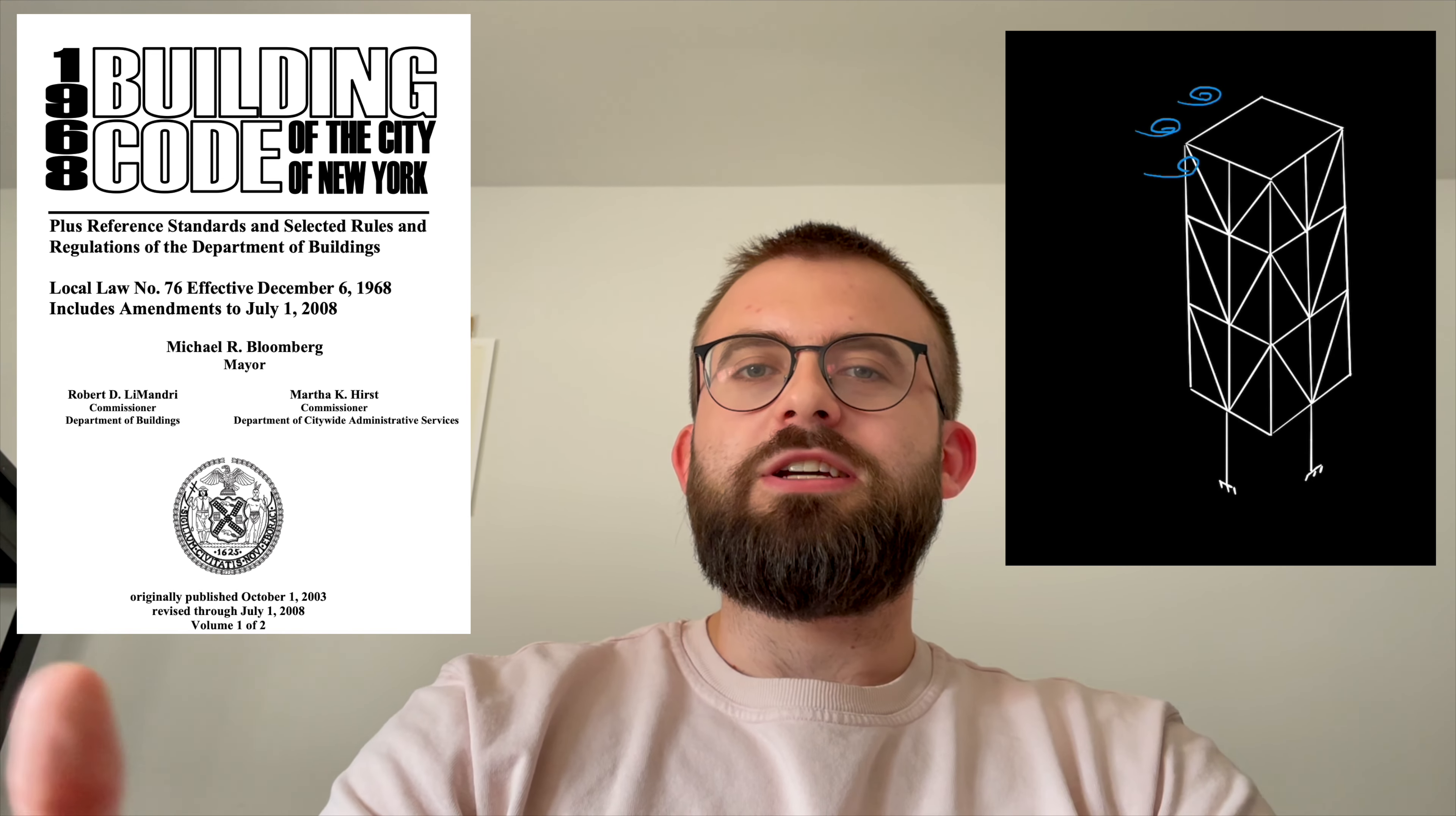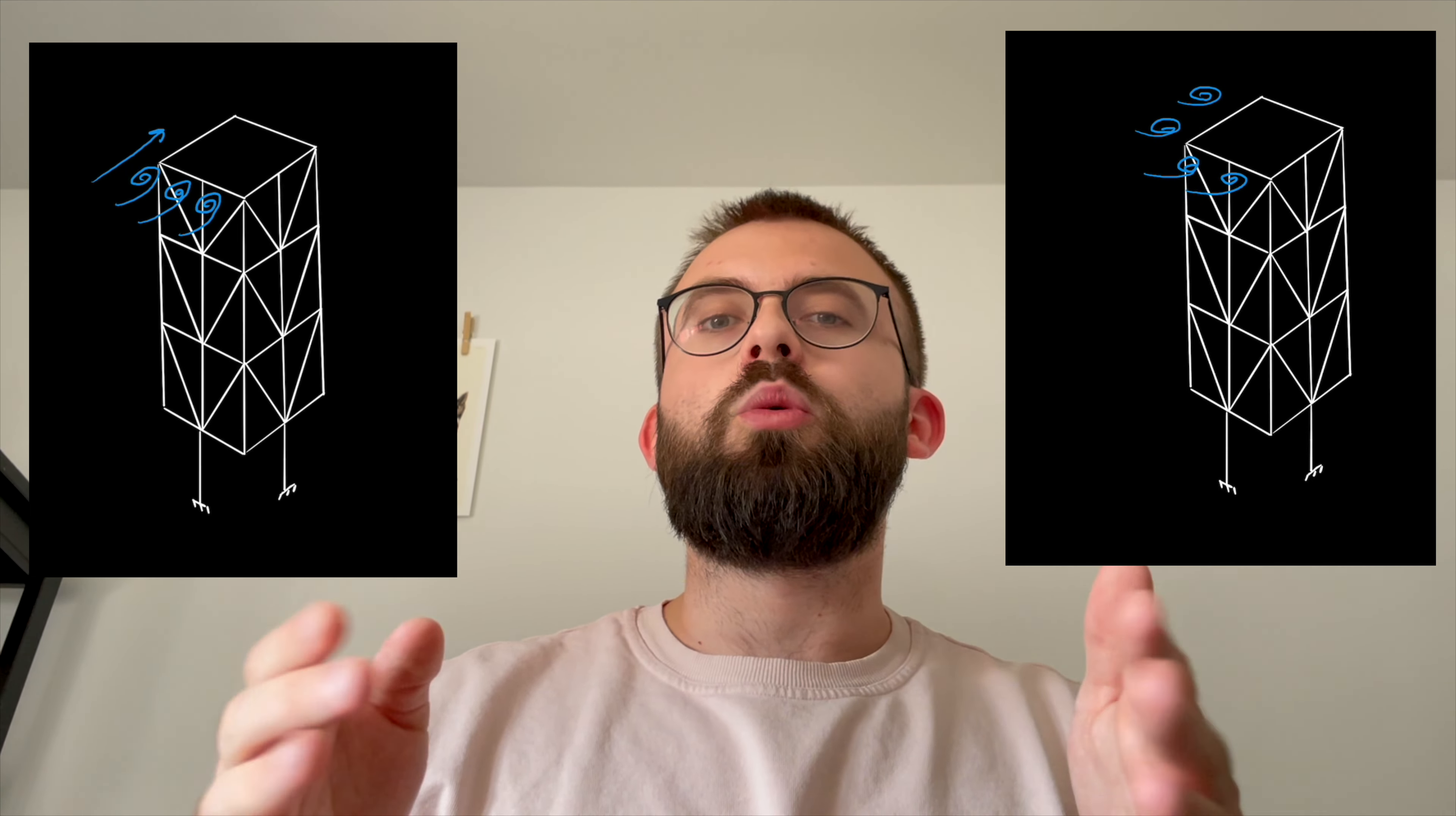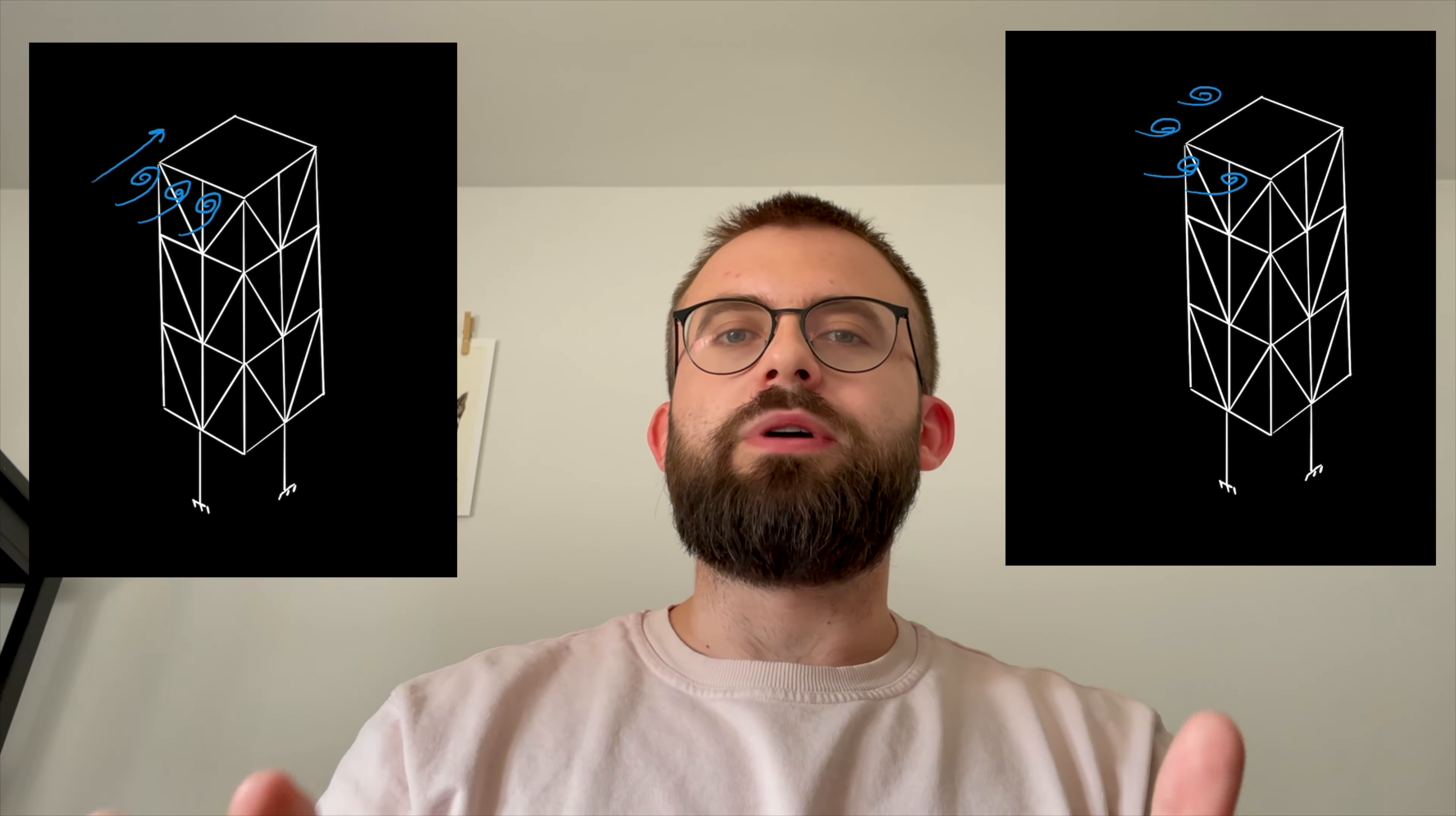Now you'll recall from the 1960s building code, you had the perpendicular winds hitting each face of the building head on, but a quartering wind is when the wind comes onto the building at a diagonal, so hitting the corners of the building. LeMessurier told the student that the columns were placed in the strongest position to resist these, and that was the end of that. But the question did pique his interest, since the 1960s building code did not require this quartering wind analysis, so he ended up going back and checked over some of his calculations just as an exercise.